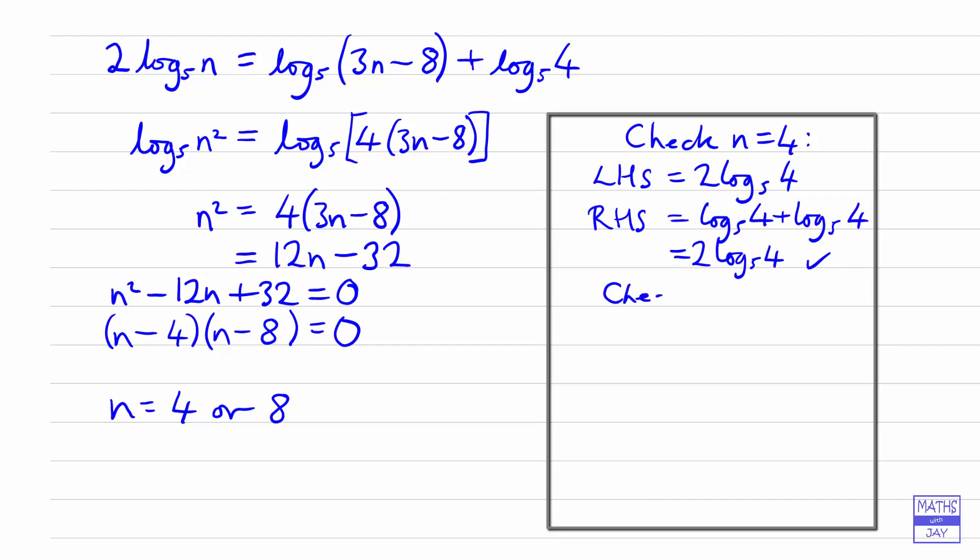And let's now check n equals 8. The left hand side is going to be 2 log to base 5 of 8. And the right hand side, log to base 5 of 3 times 8 minus 8. So that's going to be 24 minus 8 is 16. And then plus log to base 5 of 4.